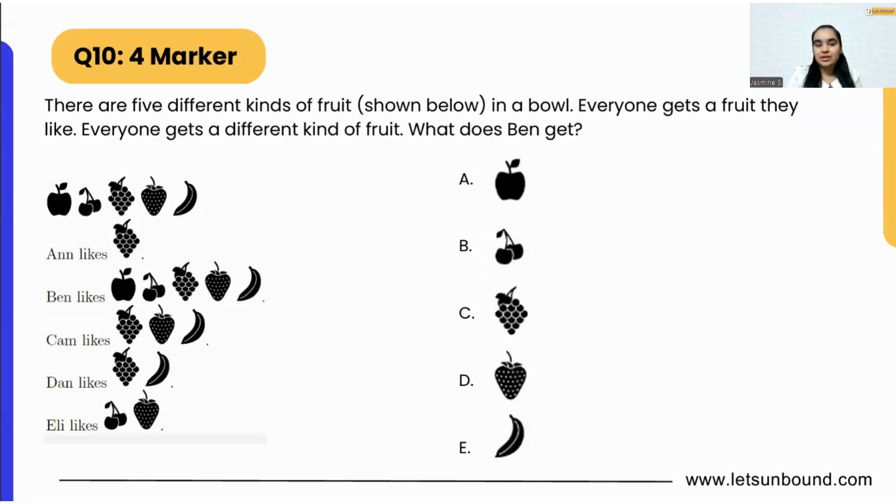The question is: there are five different kinds of fruits shown below in a bowl. Everyone gets a fruit they like. Everyone gets a different kind of fruit. So what does Ben get? Our end motive is to find out what will Ben get.